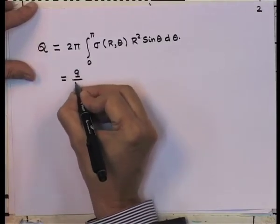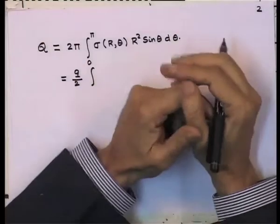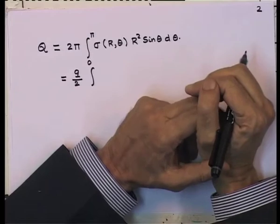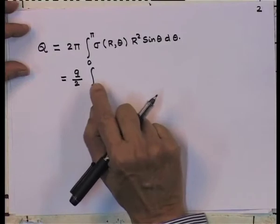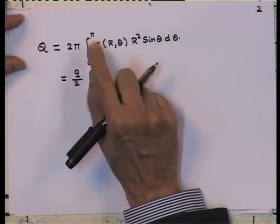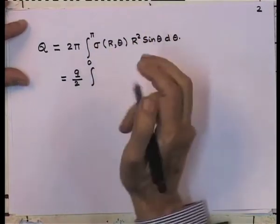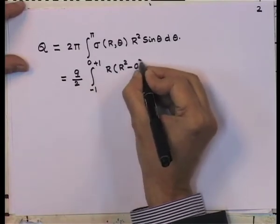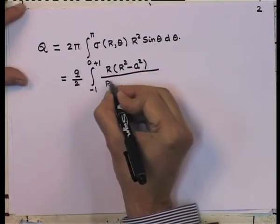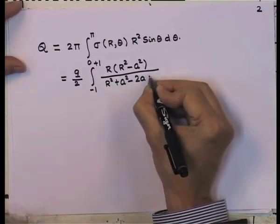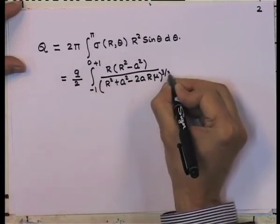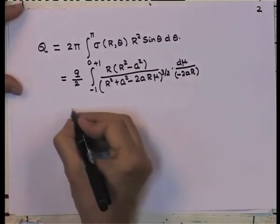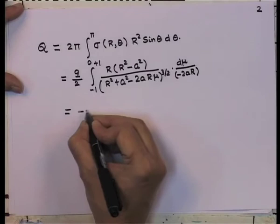The factor 1/(4π) gives q/2. Using the substitution cosθ = μ, so sinθ dθ = −dμ, and the limits change from θ: 0→π to μ: −1→+1. We integrate R(R² − a²) / (R² + a² − 2aRμ)^(3/2). This is a standard integral, and it gives a net induced charge of −qR/a.